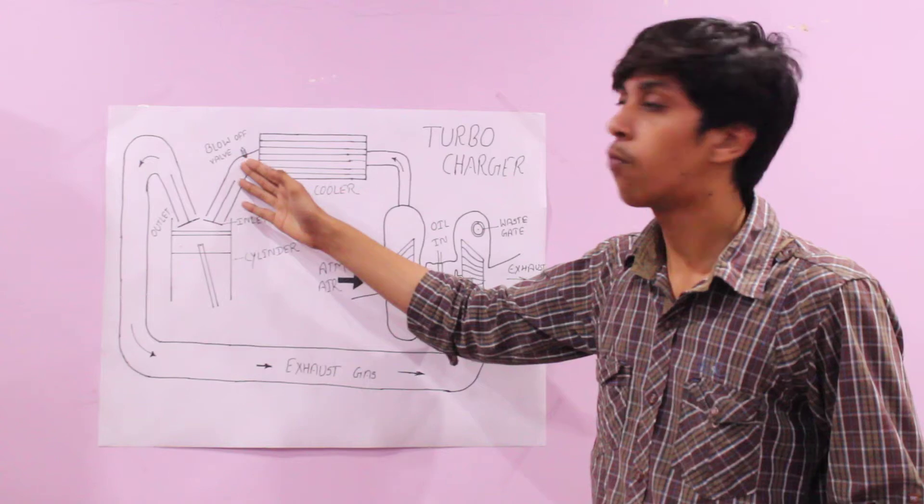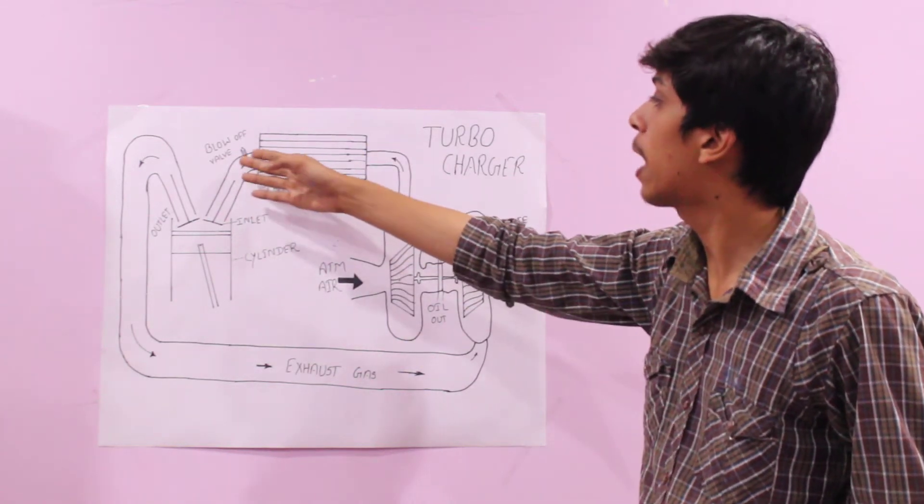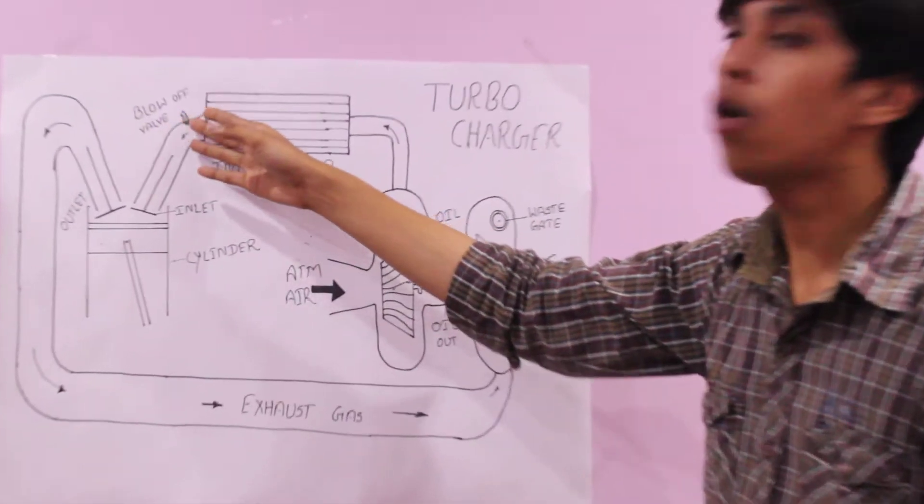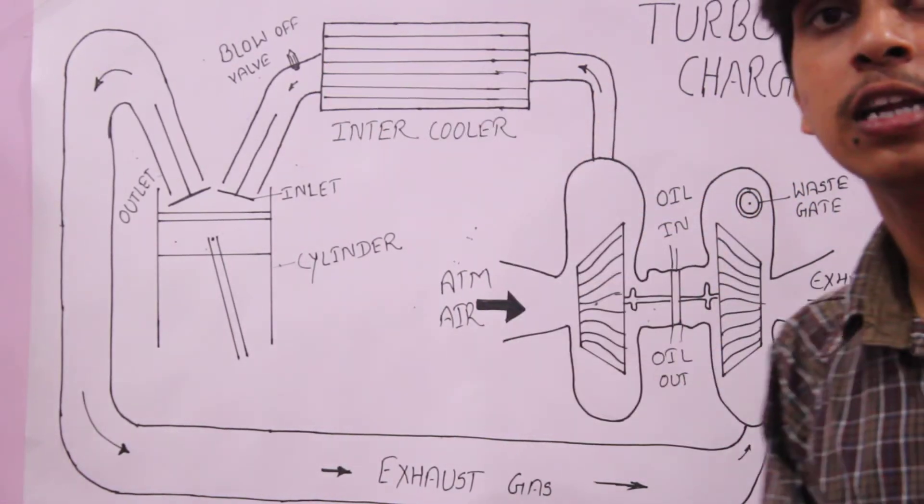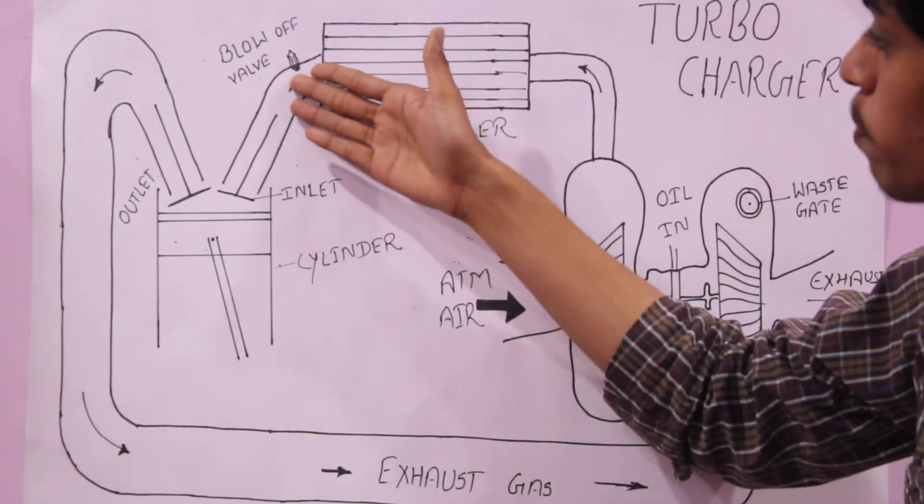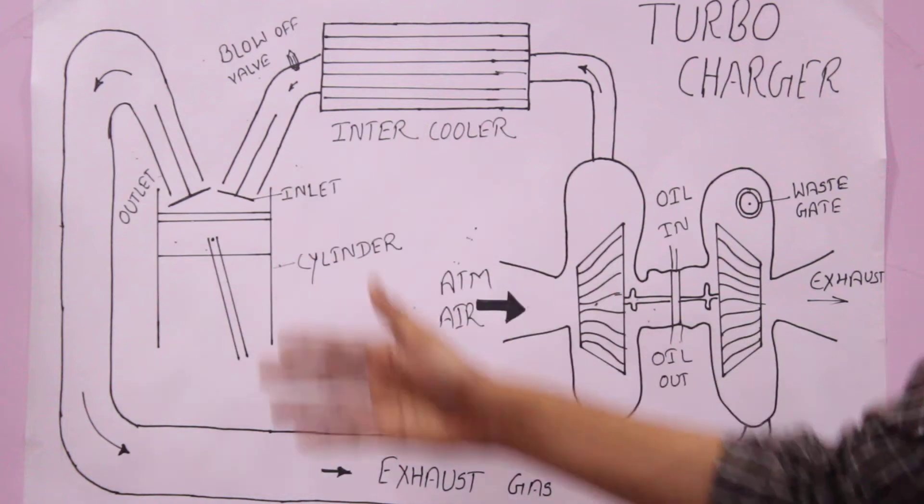Similarly, the blow-off valve. When excess air is present in this pipe, then the blow-off valve opens and some amount of air is removed from this pipe, and the required amount of air is sent to the cylinder.